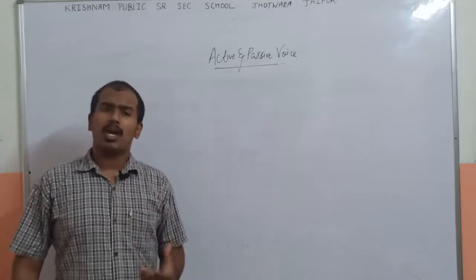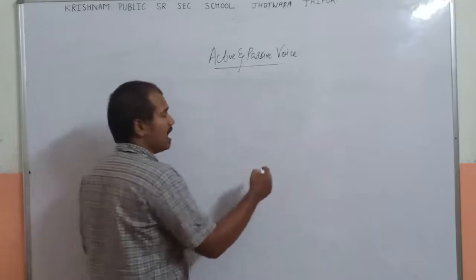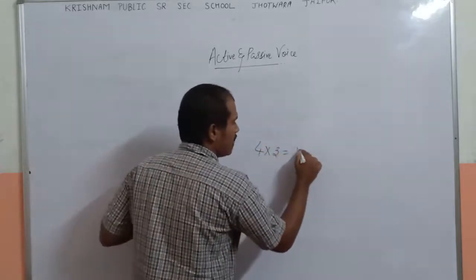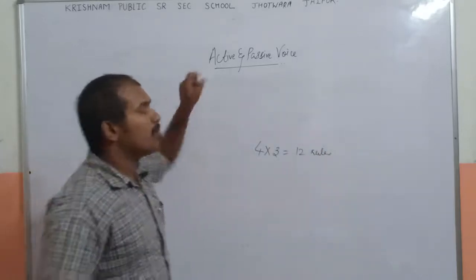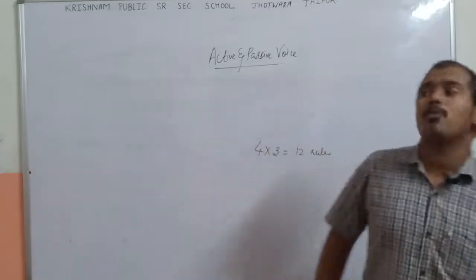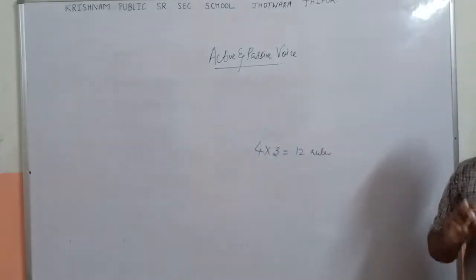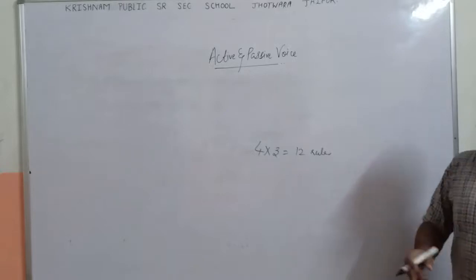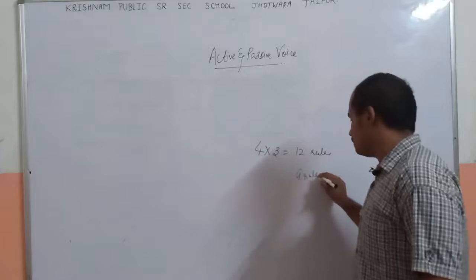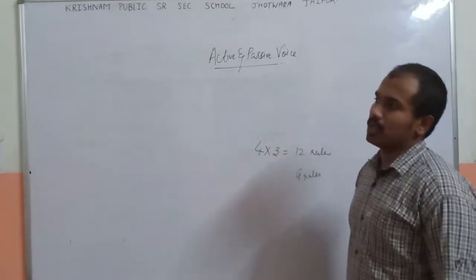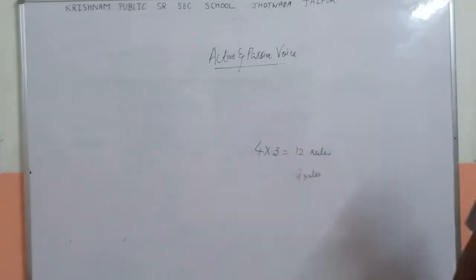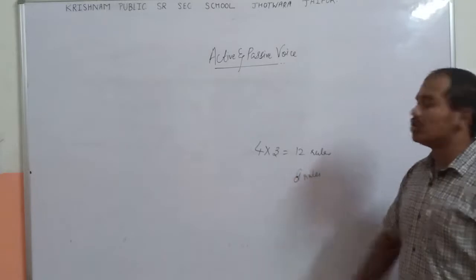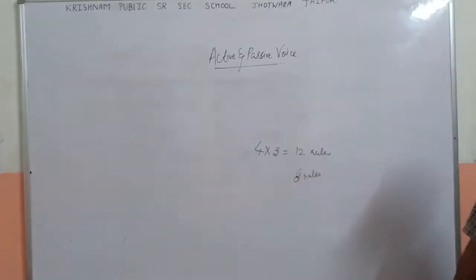Tenses is a topic which contains 4 into 3, meaning we have 12 rules to learn — 3 tenses and 4 subdivisions. But when we talk about active and passive voice, we are not supposed to learn 4 into 3 rules. Instead, we will be reducing the number of rules and will only have 8 rules here.